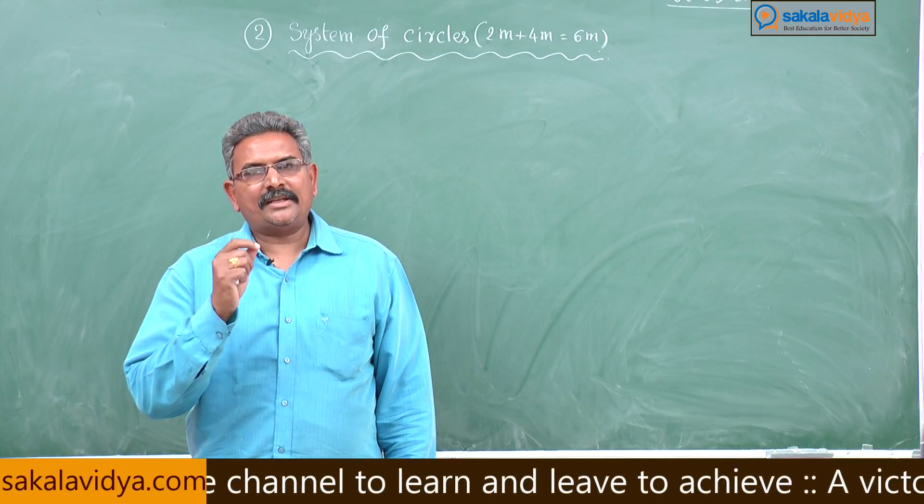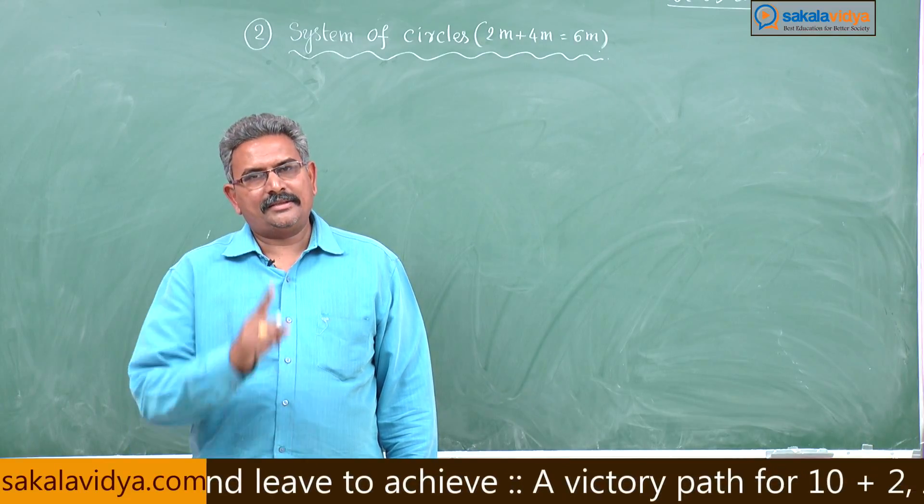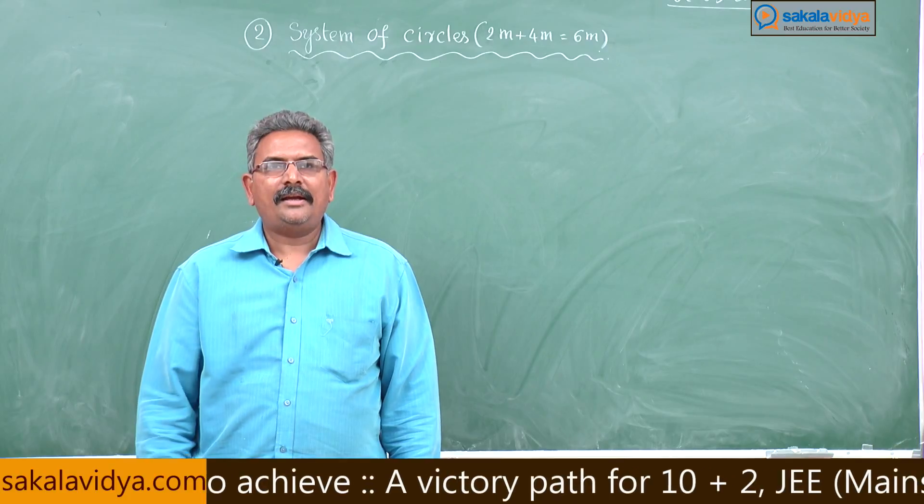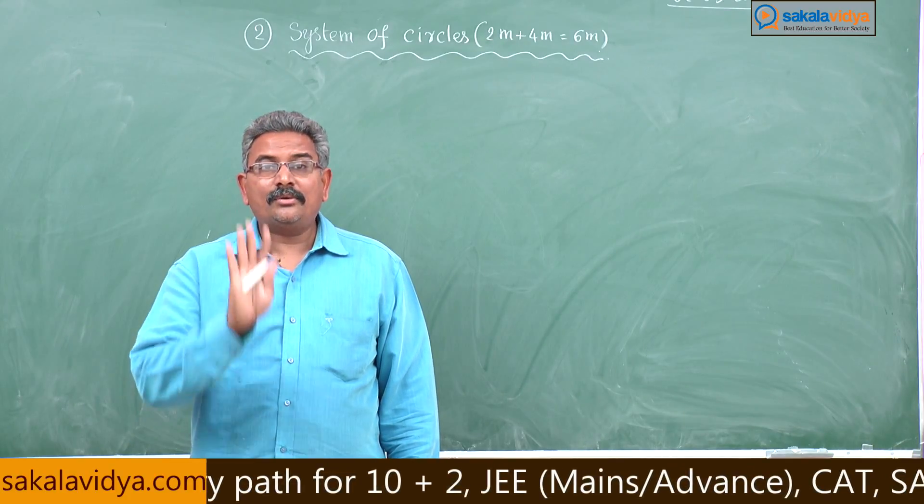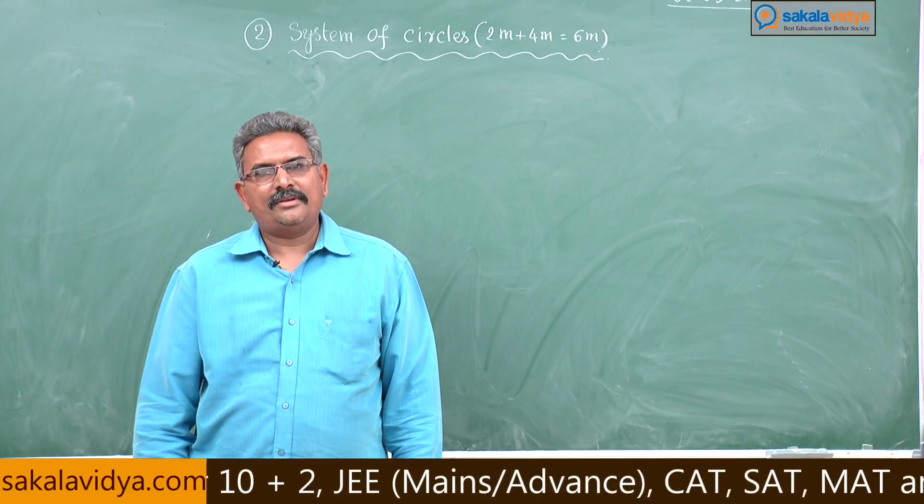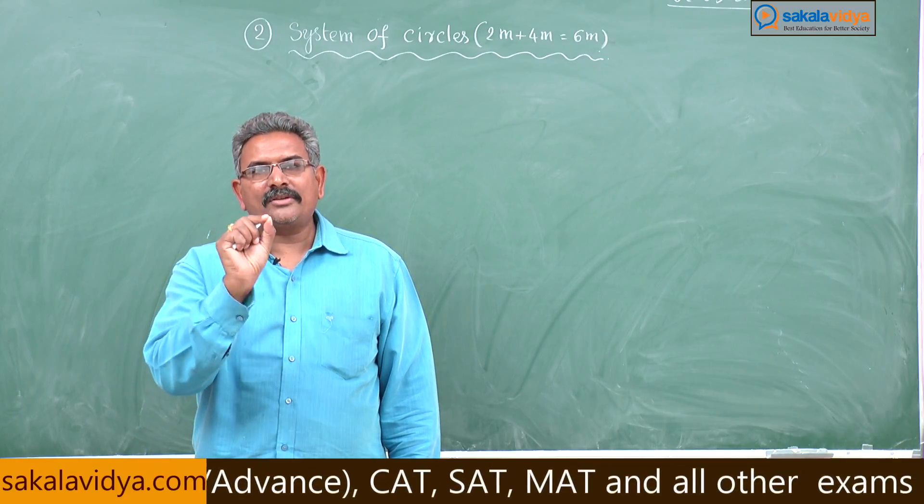From system of circles, one very short answer type question will appear that carries 2 marks, and a short answer type question will appear that is 4 marks. Total weightage is 6 marks. So, in circles out of 75, 28 marks weightage is there.